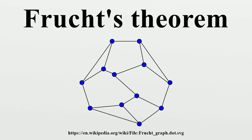However, some important classes of graphs are incapable of realizing all groups as their symmetries. Camille Jordan characterized the symmetry groups of trees as being the smallest set of finite groups containing the trivial group, closed under direct products with each other and wreath products with symmetric groups. In particular, the cyclic group of order 3 is not the symmetry group of a tree.